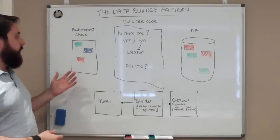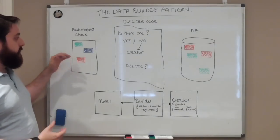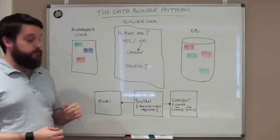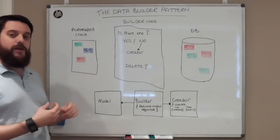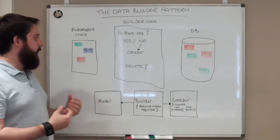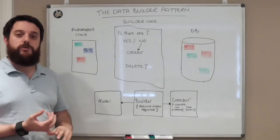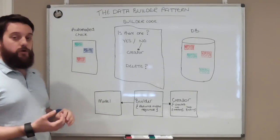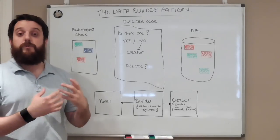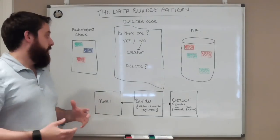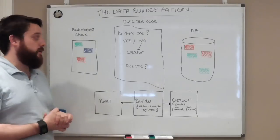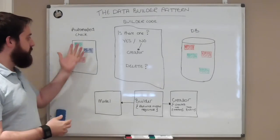We have an automated check and in this example it needs a green block, a blue block, and a red block. Now they could represent anything in your system. In my current context, the green block could be a user, the red block could be an offer, and the blue block could be a gift. Those are objects that exist in my system, in my database.